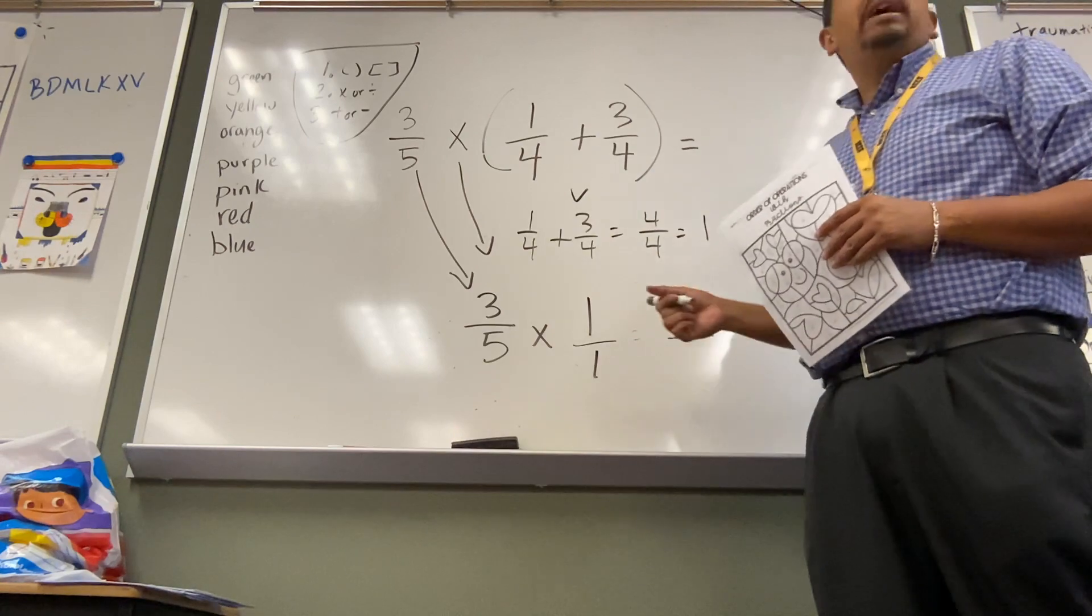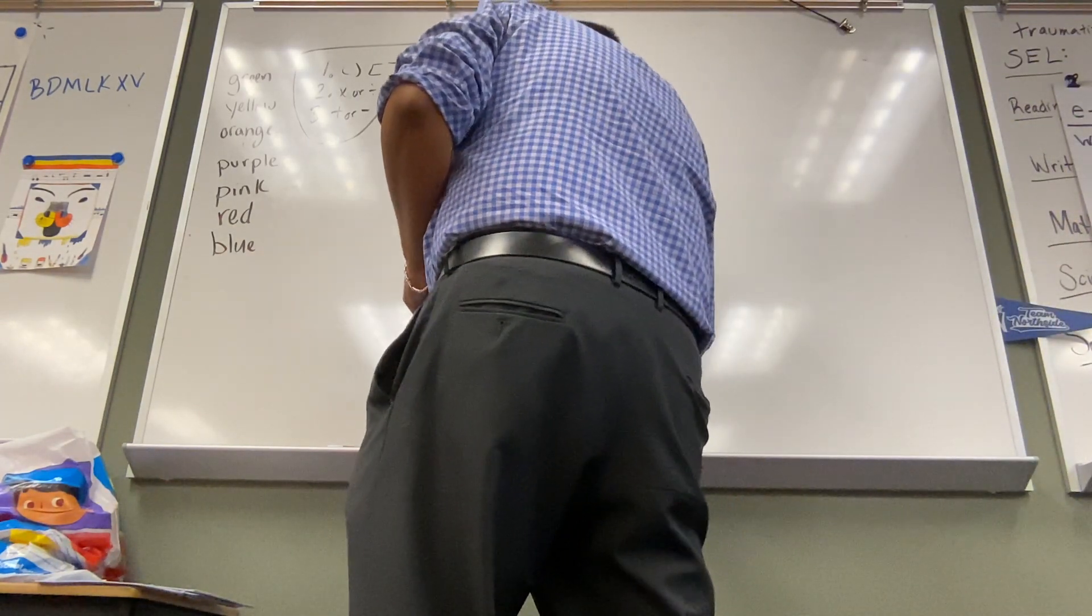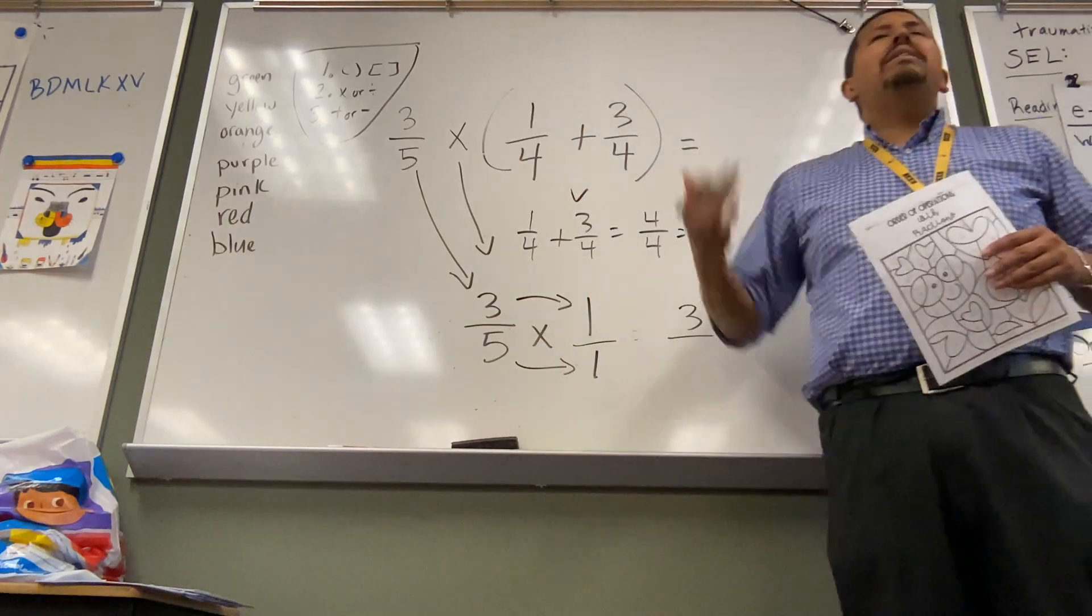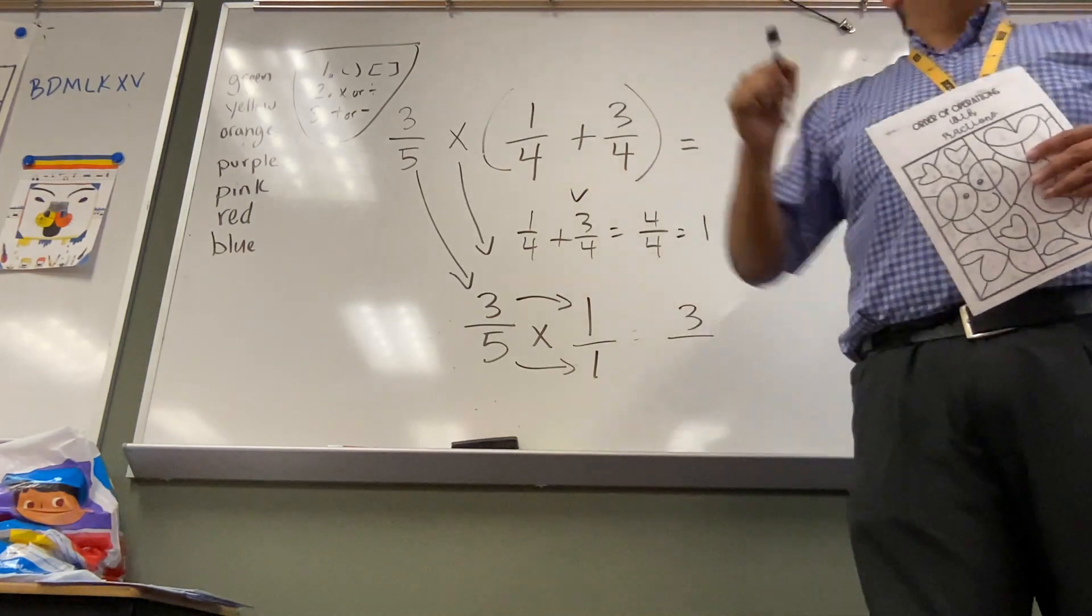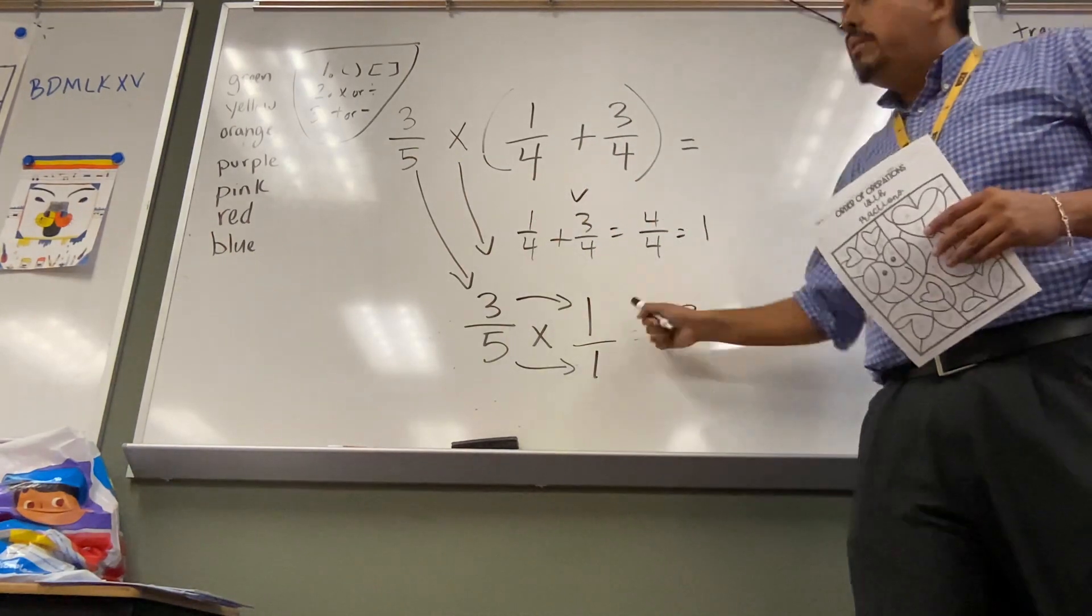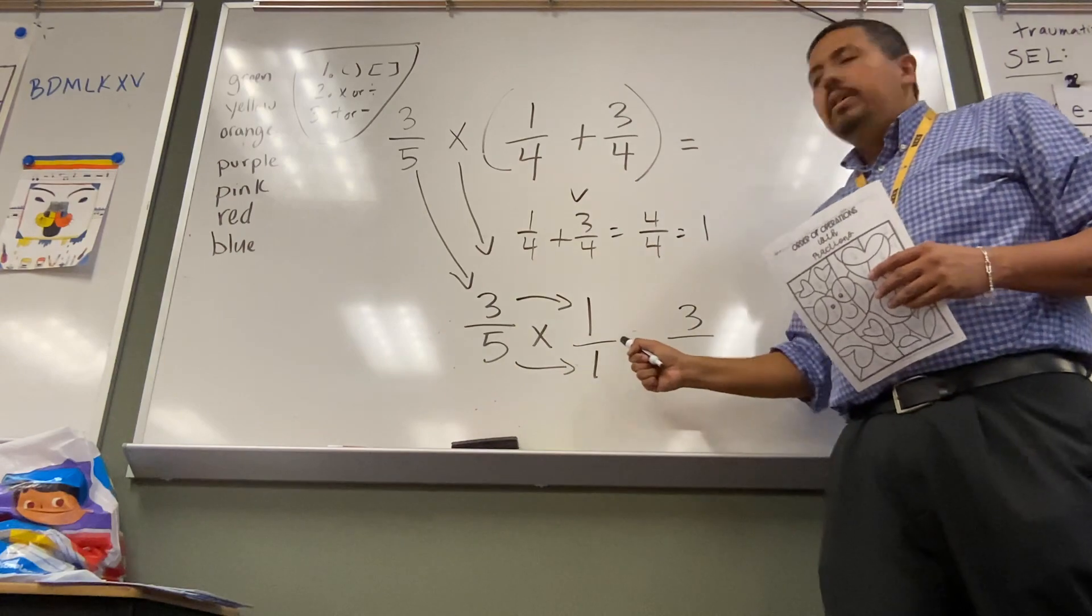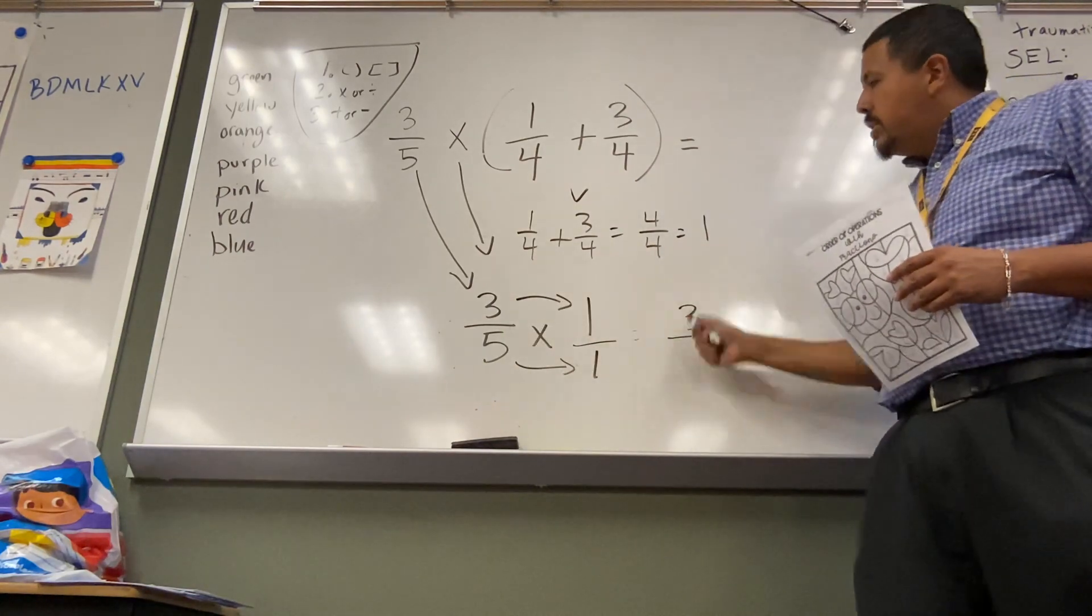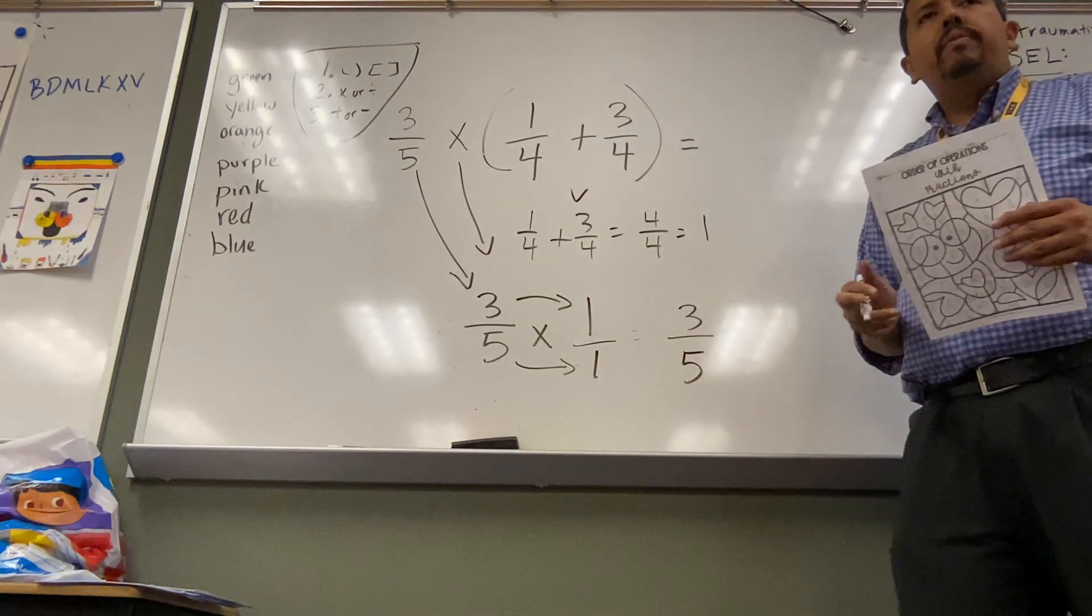But I want to go through the steps because this was a great example. I want to go through the steps so we understand when we multiply, we have to give, well we don't have to, but it just makes it easier. We talked about it in our last video. It makes it easier for us to multiply when we give that whole number a denominator. Then all we do, multiply across, and we get our answer. Three times one is three. Five times one is five. And my answer is three-fifths.